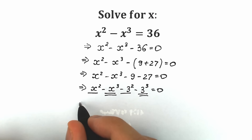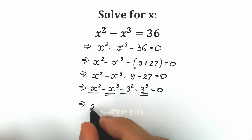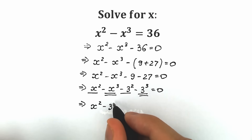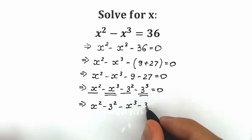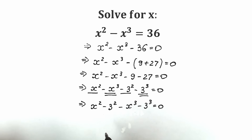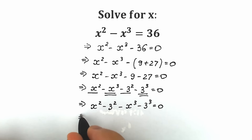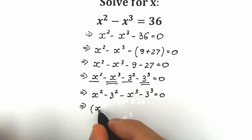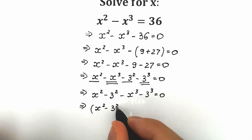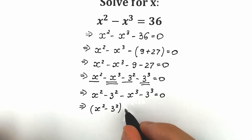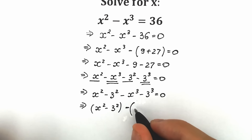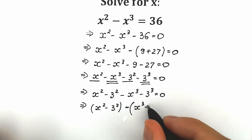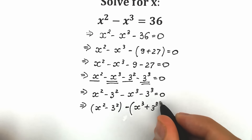So we have x squared minus 3 squared — those are our squares — and minus x cubed minus 3 cubed, equal to 0. Let's take this second expression inside parentheses. As a result, we have x squared minus 3 squared, and we take the second expression inside parentheses with a minus sign, so inside we need to change signs: minus, with x cubed plus 3 cubed inside the parentheses, equal to 0.